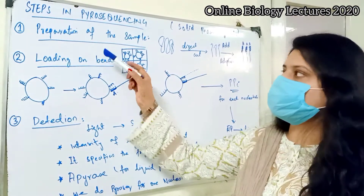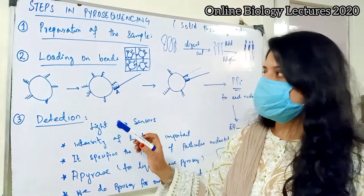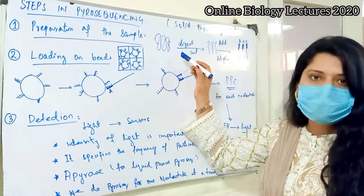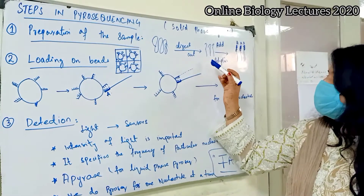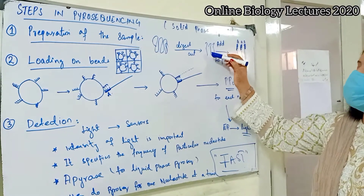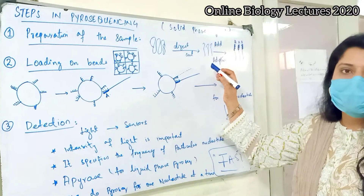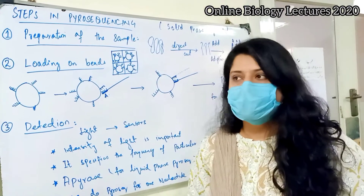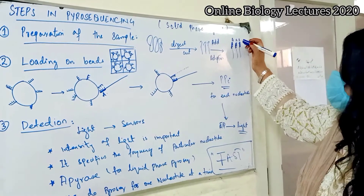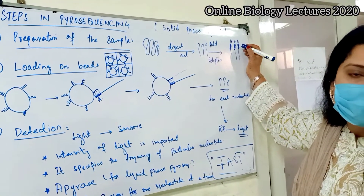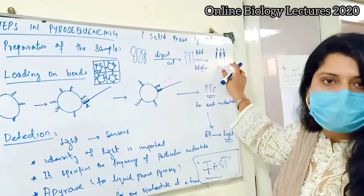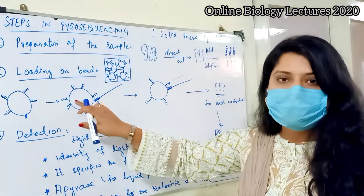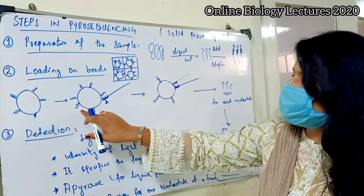Now we will discuss the steps involved in pyrosequencing. First, we need to prepare the sample, which is the DNA. We extract the genomic DNA, then digest or cut it into pieces with restriction enzymes to achieve shorter fragments. These shorter fragments are then added with adapters — short sequences of nucleotides added at the end of the DNA — because we need to load the DNA sample onto a bead, and the bead contains short sequences complementary to these adapters.